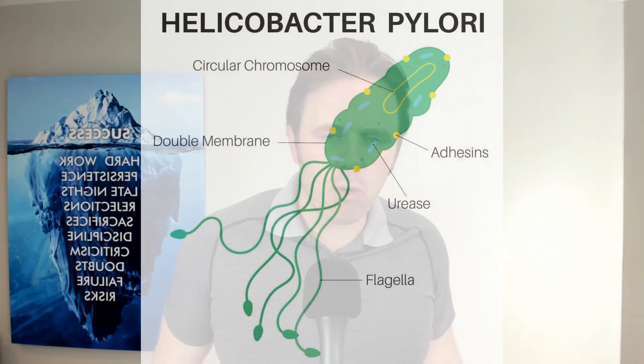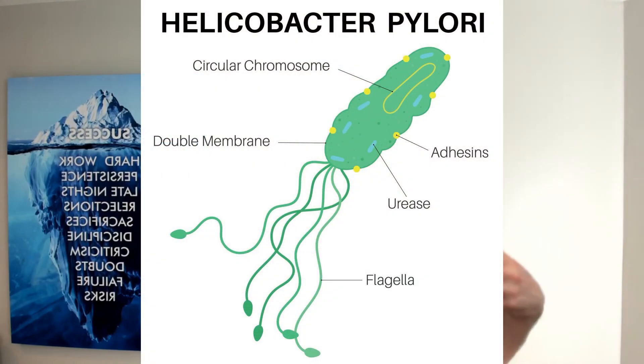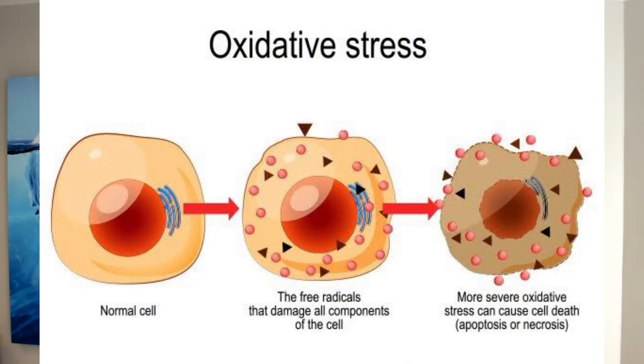I always recommend the natural treatment to address H. pylori first. We use different herbs — mastic gum, berberine, clove, wild indigo — and I've had a great success rate with those without the side effects. Antibiotics can create a lot of oxidative stress, especially fluoroquinolones, which are known to cause DNA damage and mitochondrial damage — not good.